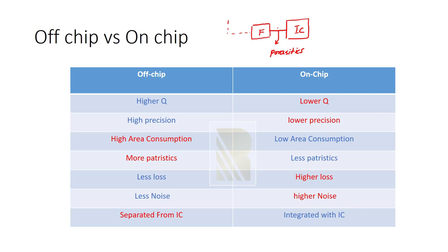Another problem with off-chip filters is that they are separated from the IC — we can't integrate them inside; they must remain outside on the board. For on-chip filters, they have lower precision and lower Q, and they have loss and noise. But they have very low area consumption compared to off-chip. They are fabricated along with the IC components and transistors, so they consume very little area and have fewer parasitics since they don't require extra connections — they are physically close to the IC components.